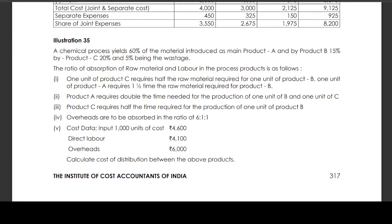A chemical process yields 60% of the material introduced as main product A, by-product B 15%, by-product C 20%, and 5% being the wastage. The ratio of absorption of raw material and labor in the process products is as follows.